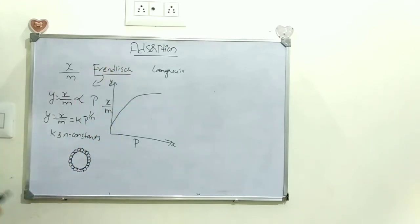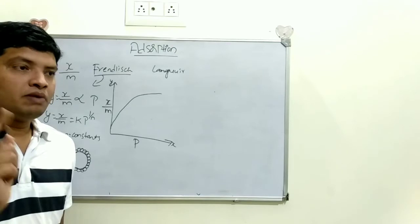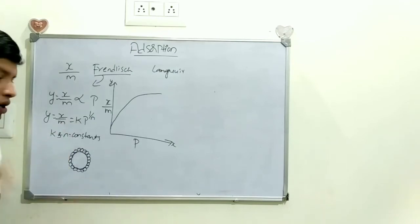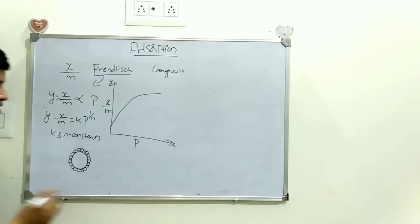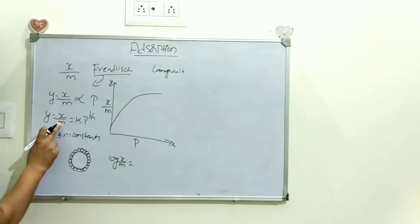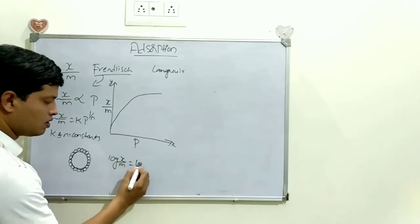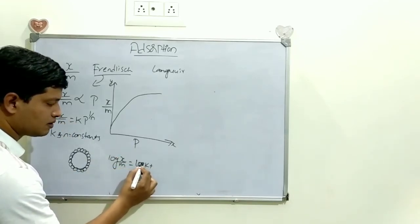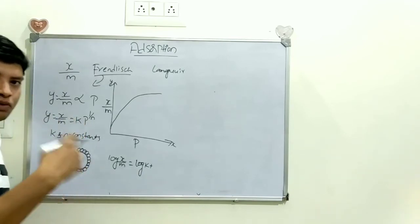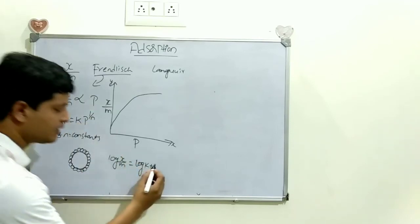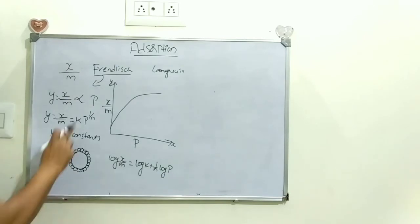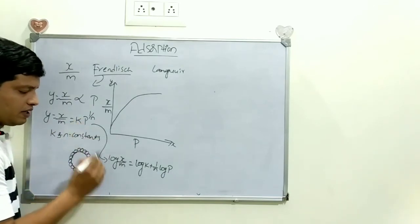To make this graph a straight line — which is easier to read — we apply log to the Freundlich equation. Applying log gives: log(x/m) = log k + (1/n) log P. This uses the rule log(x^m) = m·log x, so 1/n becomes the coefficient of log P.